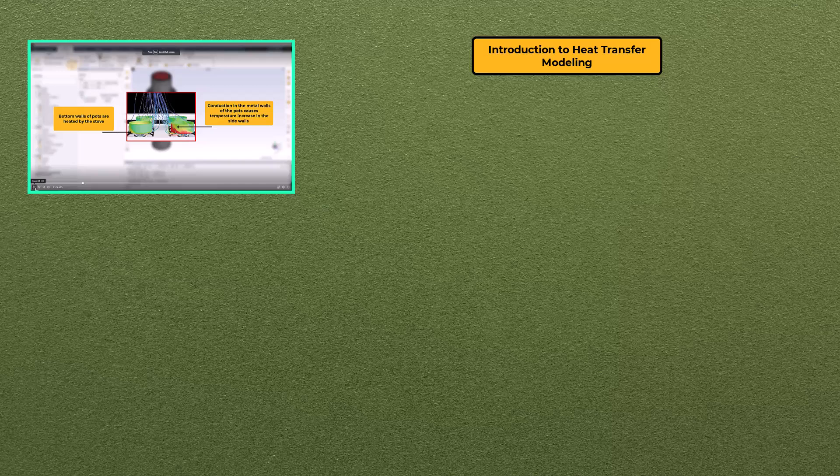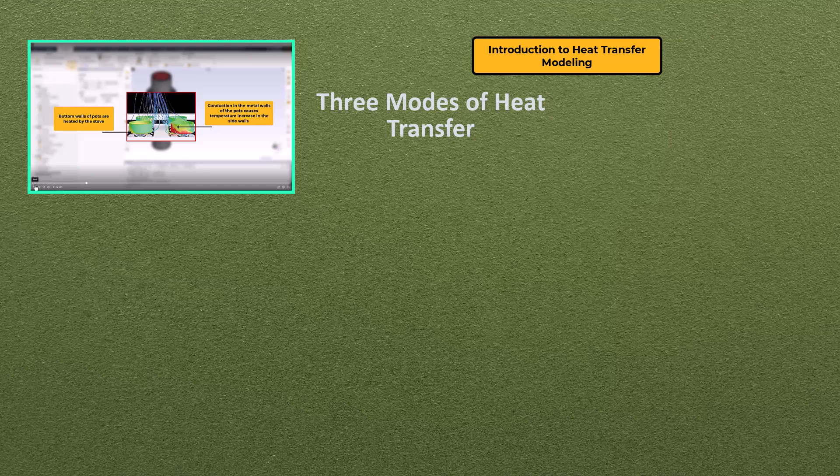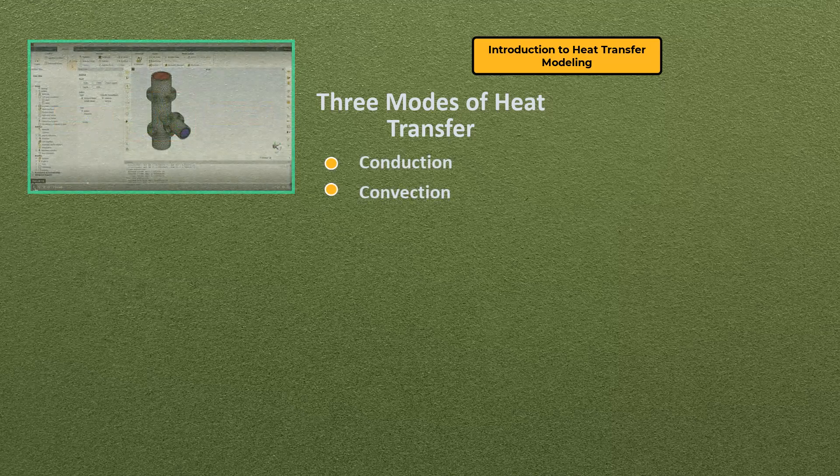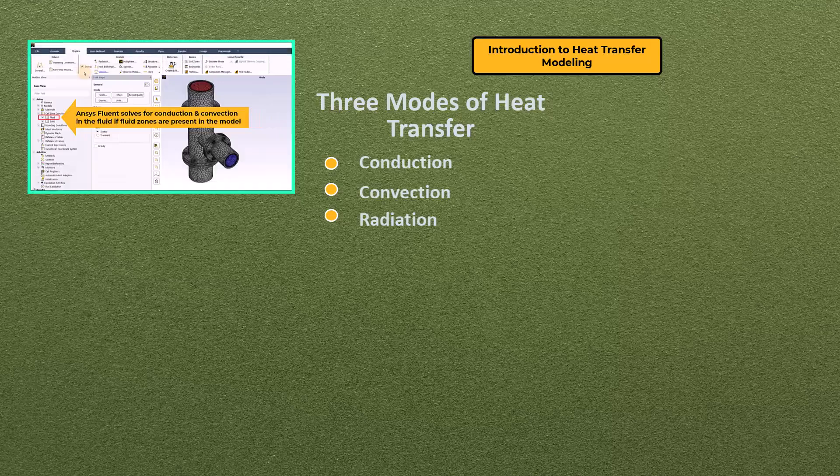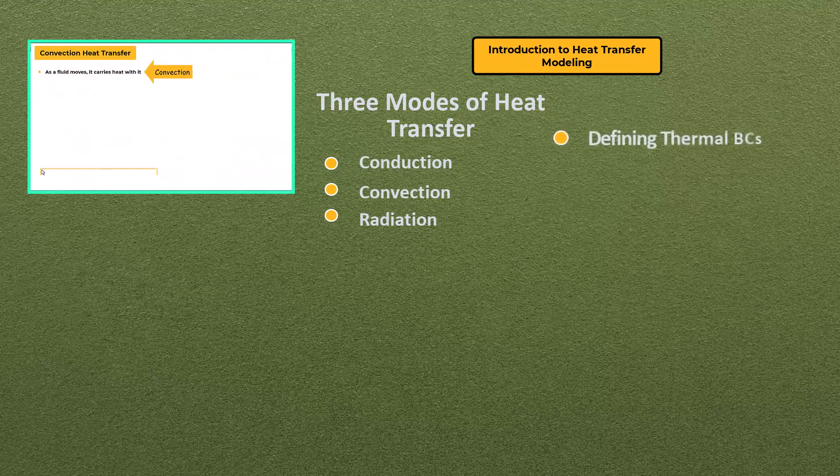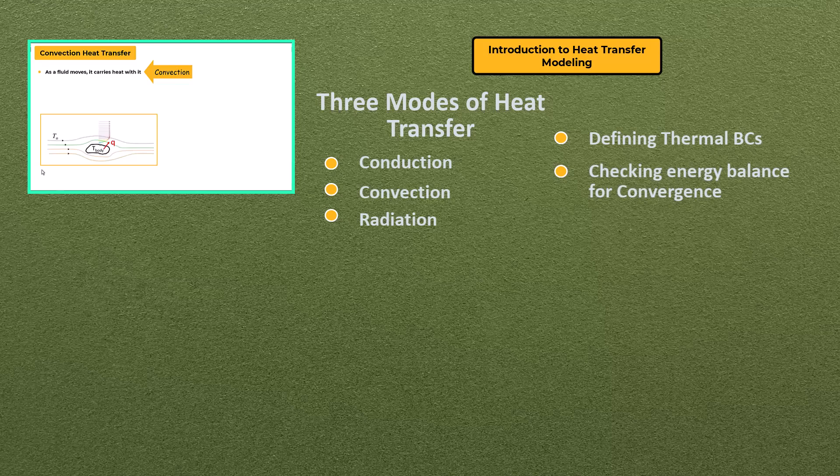We will begin the course with an introduction to heat transfer modeling in ANSYS Fluent, where we will get acquainted with three major modes of heat transfer that is conduction, convection, and radiation. The lesson will provide tips on key topics such as defining thermal boundary conditions, checking energy balance for the convergence of results, and much more.